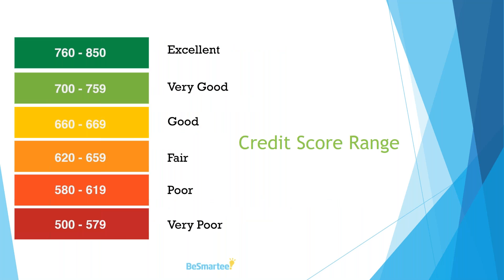Here are the credit score ranges. If you have a Discover card, you can get your FICO score on your bill every month, which gives you an idea of whether you're going up or down. A change of a couple of points within the same range is not significant, but if you're starting out with fair or good credit, you want to keep working to get very good or excellent credit so you get the benefit of that FICO score in future borrowing.